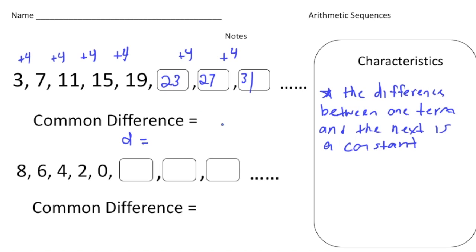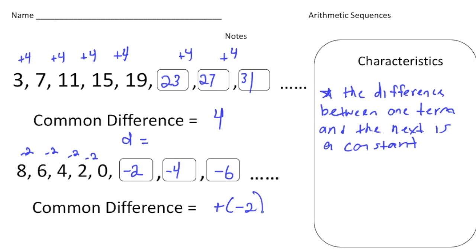Now for this second sequence: 8, 6, 4, 2, and 0. Do you see the pattern? Each one of these is declining by 2 — so minus 2, minus 2, minus 2, and minus 2. The next number is negative 2, then negative 4, then negative 6. So the common difference for this one is negative 2. Remember, a lowercase d stands for common difference.